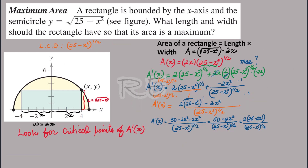Now let's look for the critical points of A prime of x. Notice that the denominator is not that important. It's a square root, so it's non-negative — in fact positive. It cannot equal zero because that would require x squared equal to 25, meaning x equals 5, which makes y equal to 0, and therefore we don't have a rectangle. So we will not consider that possibility.